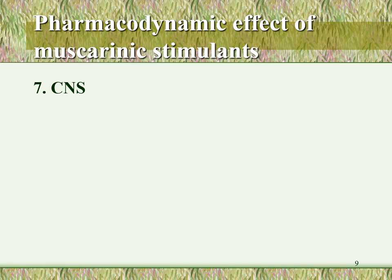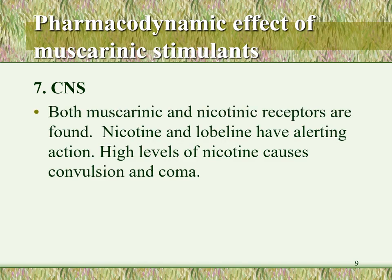Regarding the pharmacodynamic effects of muscarinic stimulants on the central nervous system: both muscarinic and nicotinic receptors are found in the CNS, and we will discuss this in more detail next semester when covering CNS pharmacology. For example, muscarinic receptors are important in Parkinsonism, and anti-muscarinic drugs can be used for its treatment. Nicotine and lobeline have alerting actions through nicotinic receptors. Higher levels of nicotine can cause convulsions and coma due to their excitatory effects.